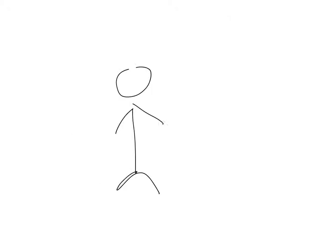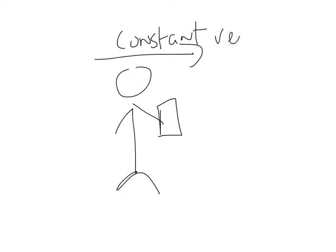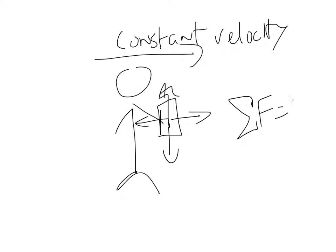If we change the scenario and put the person carrying the box at constant velocity, the sum of the forces is zero — so there's no work. You have to be very cautious on this, because work has to be in the same direction as the force.